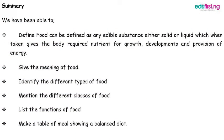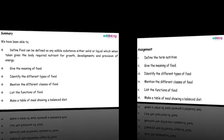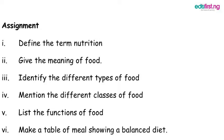In summary, we have been able to define what food is — food is any substance we take that can be in the form of liquid or solid, which enhances the growth and development of our body and also provides energy for us. We have identified the different types of food, mentioned the different classes of food, listed the functions of food, and made a simple timetable showing a balanced diet.